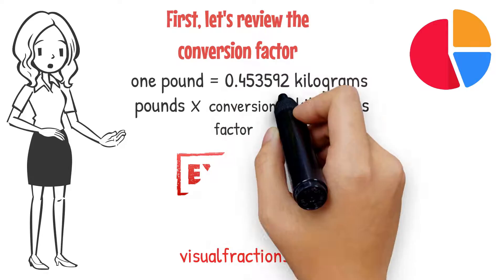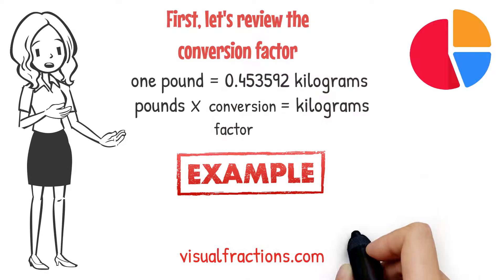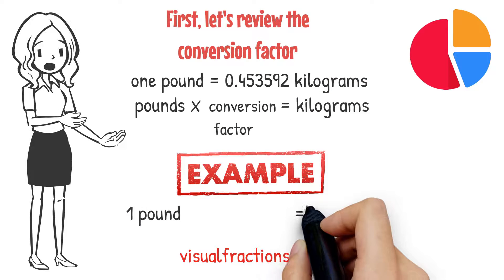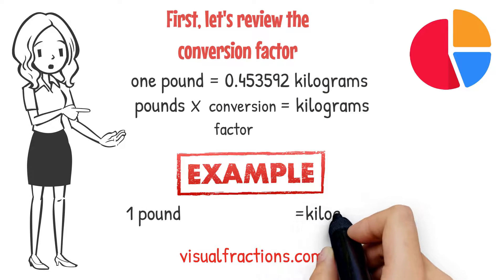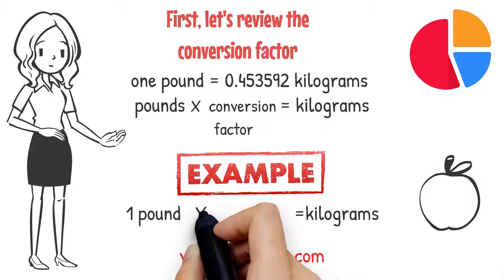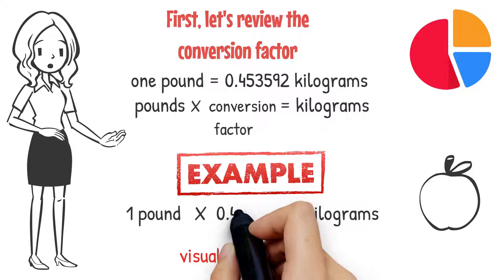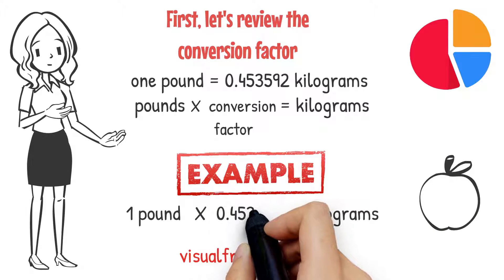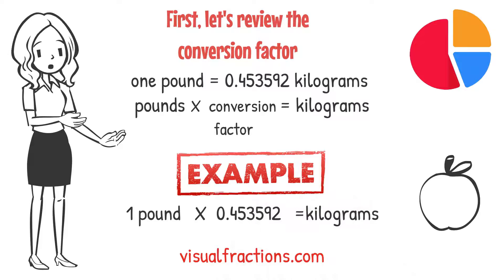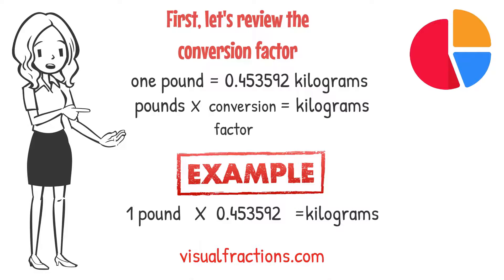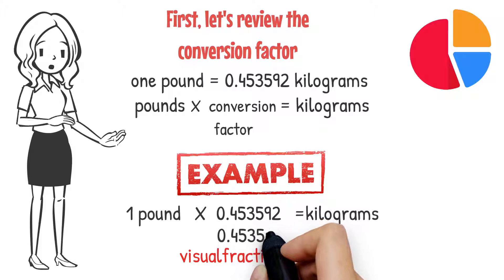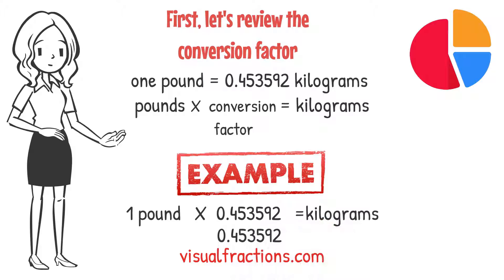Let's walk through an example. Say you have 1 pound of apples that you need to convert to kilograms. We start by multiplying 1 by the conversion factor of 0.453592. This gives us approximately 0.453592 kilograms.